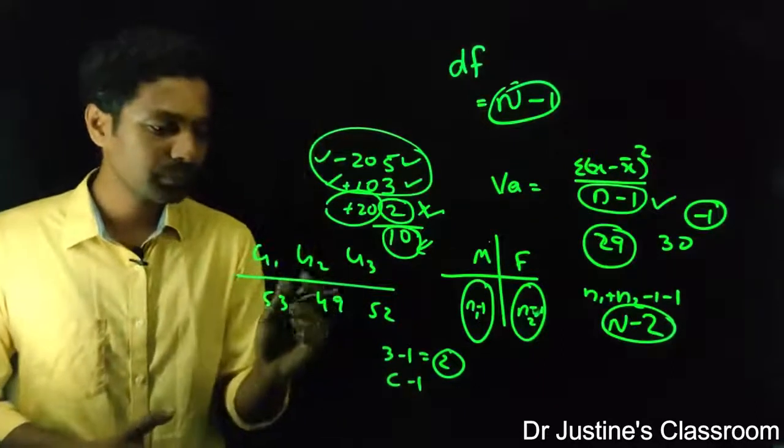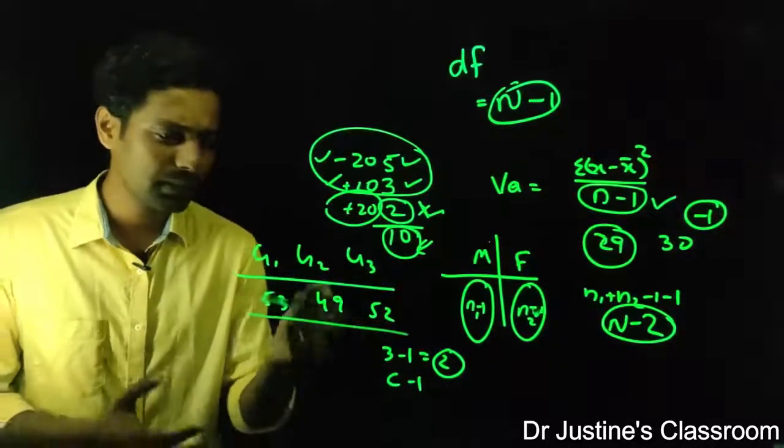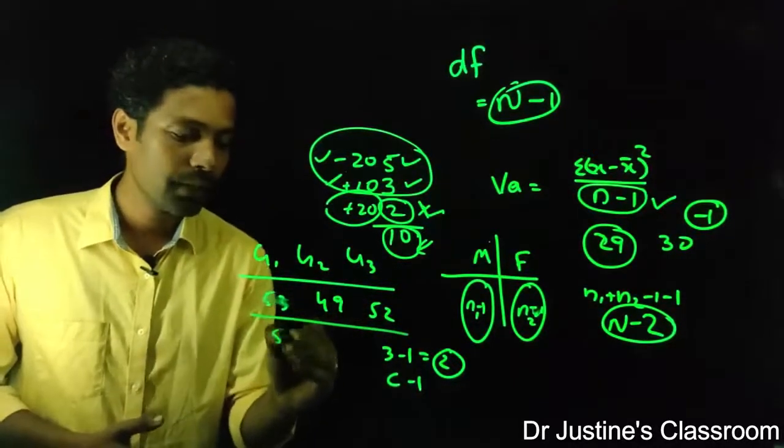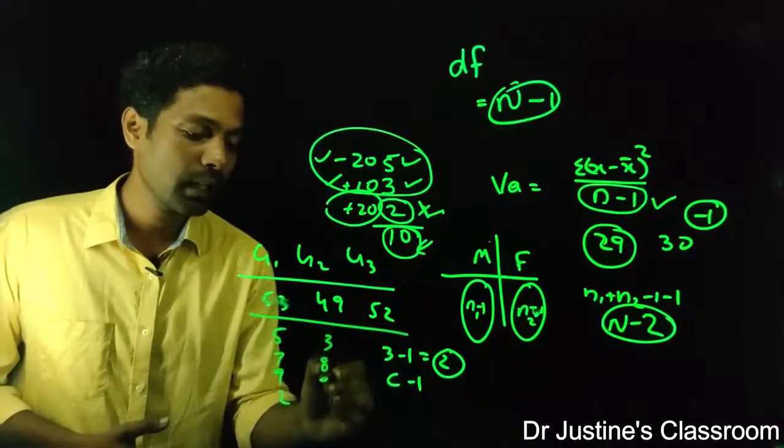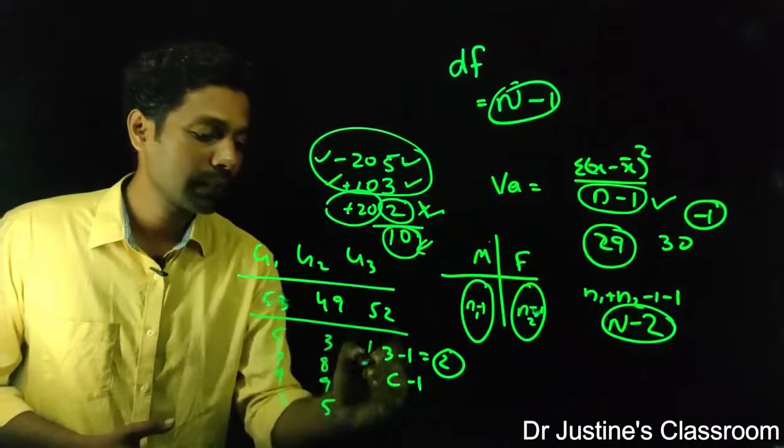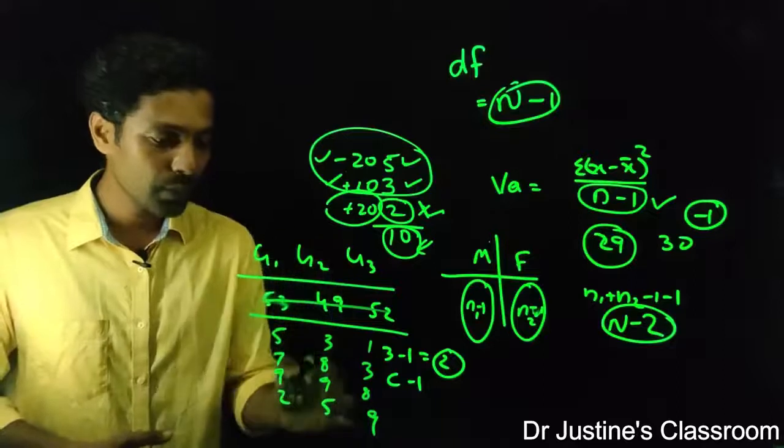What about within group degree of freedom in the case of ANOVA? So I have group 1. Instead of the total score, I am taking the original values here. Just for example, I'm taking 5, 7, 9, 2, like that. Or 3, 8, 9, 5, 1, 3, 8, 9, some values. These are the values in group 1, group 2, group 3.